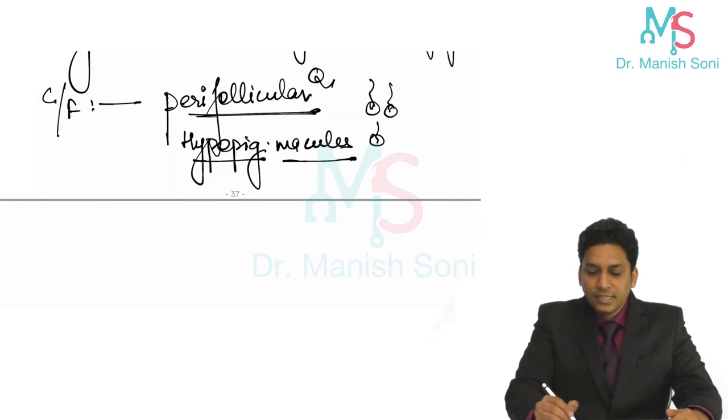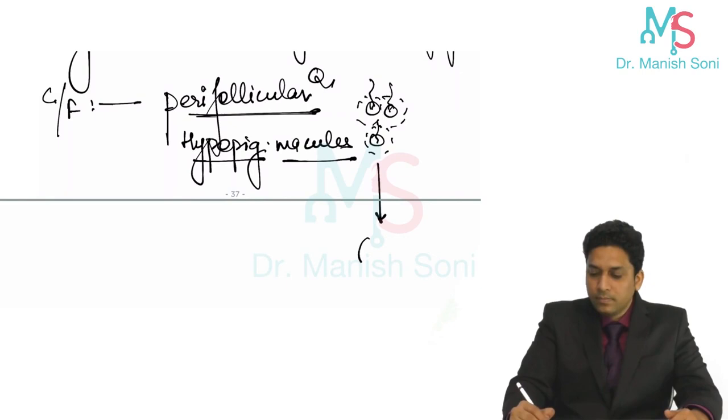These are small, they are light in color, and they are around hair follicles. Now, gradually they increase in size and they merge together to form a patch.